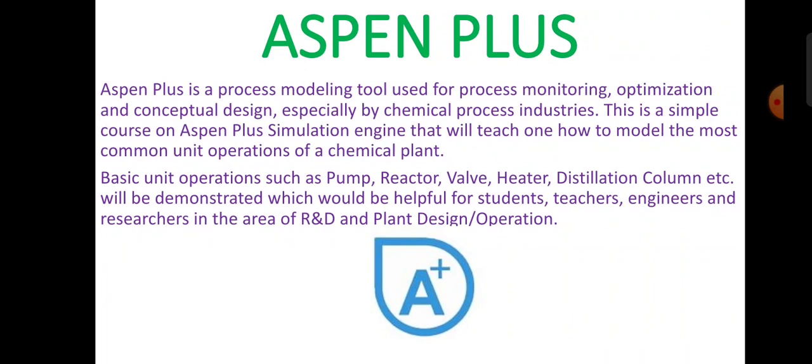The next software is Aspen Plus. Aspen Plus is a process modeling tool for process monitoring, optimization, and conceptual design, especially used by chemical process industries. It covers modeling of the most common unit operations of a chemical plant — basic unit operations such as pumps, reactors, heaters, distillation columns, etc. — which would be helpful for students, teachers, engineers, and researchers in R&D and plant design.